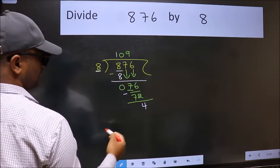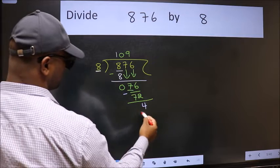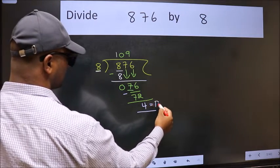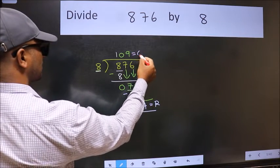No more numbers to bring it down, so we stop here. This is our remainder and this is our quotient.